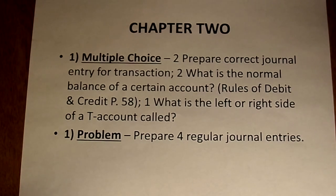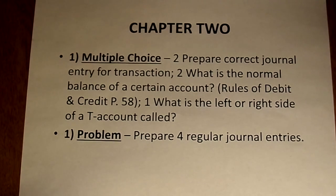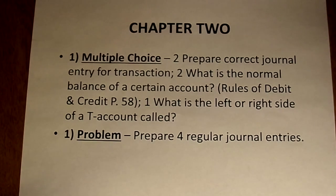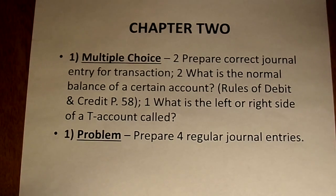The one problem from Chapter 2 is: here are transactions, prepare journal entries. One thing to know about the problem section is that this is a Blackboard test. The multiple choice is self-explanatory — one of four answers is correct and you pick it. But the problems will appear as essays, which means you're going to have to typeset your answer.